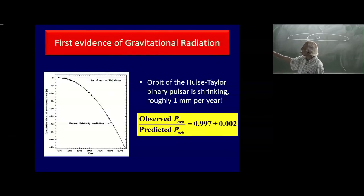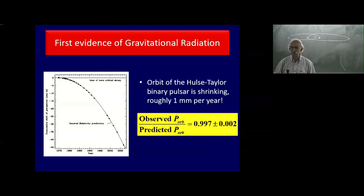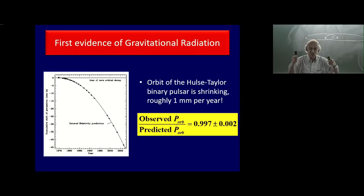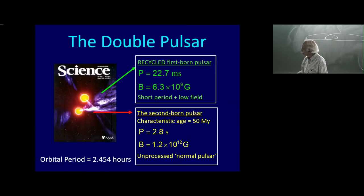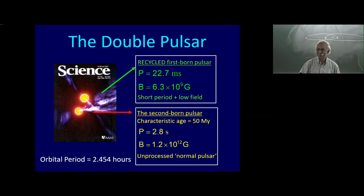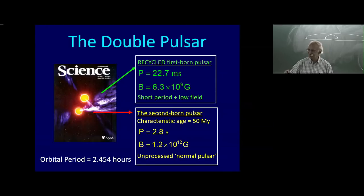The binary pulsar was discovered in 1974, and the Nobel Prize was awarded in 1993 — about 20 years later. In 2002, a second binary pulsar was discovered — two neutron stars going around each other, but this time both neutron stars are beaming toward us, so both function as pulsars. The orbital period of this double pulsar is a ridiculously small two hours, making the relativistic corrections even stronger.